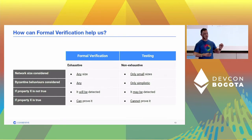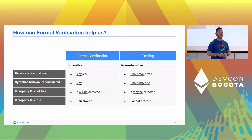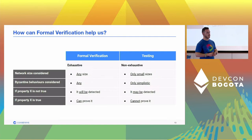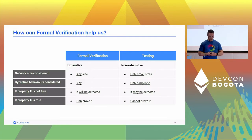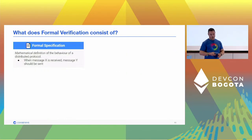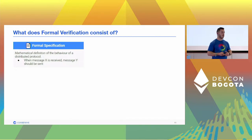Moreover, if a property is actually true, with formal verification we can prove that it is true. With testing we cannot, because it's not exhaustive. This is the benefit — this is why formal verification is very well suited for this protocol.